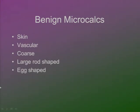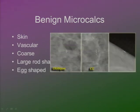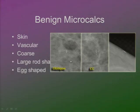Benign microcalcifications can be on the skin, on blood vessels, or present as popcorn-like large rod-shaped calcifications from mastitis, or eggshell-shaped as in oil cysts or fat necrosis. Skin calcifications have a key characteristic: they have the same shape and the same morphology in both the oblique and CC views of mammography — this is the typical finding.